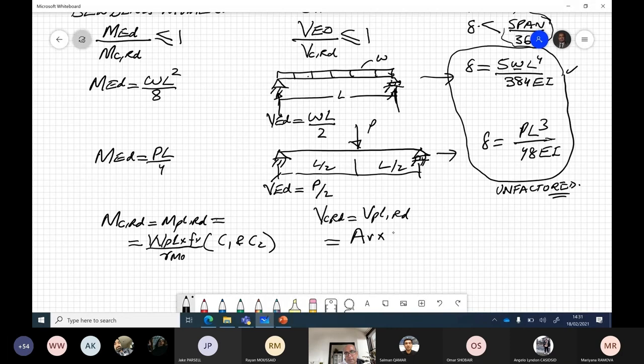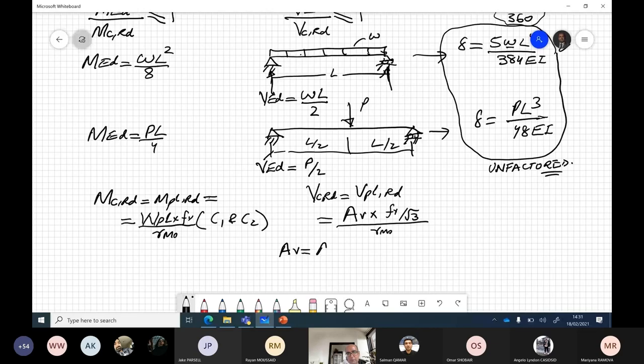V_C,RD or V_PL,RD is equal to A_V times f_y under root 3 divided by gamma_M0. For deflection, you already have the deflection limit. Now how do we work out A_V?